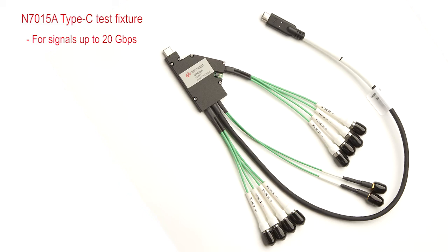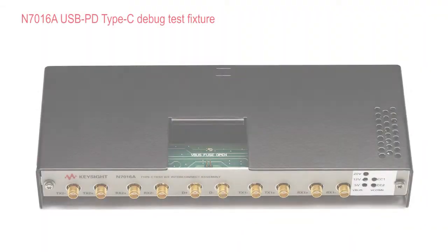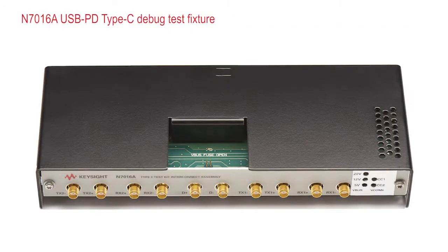A critical component to help test and output the signal on Type-C is the Type-C debug test fixture. It allows you to set up the RD-RP resistors and program them such that the product can emulate either a host or device, to allow your device to output the proper signals.